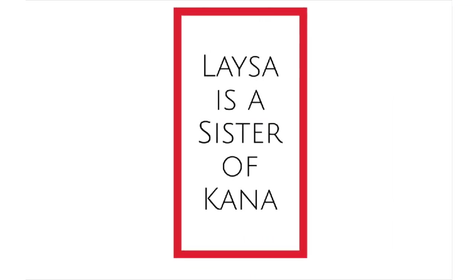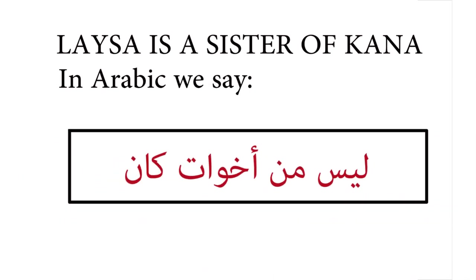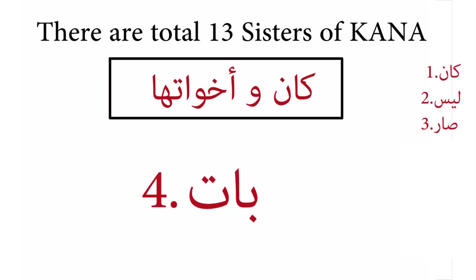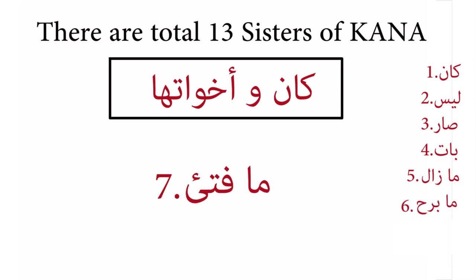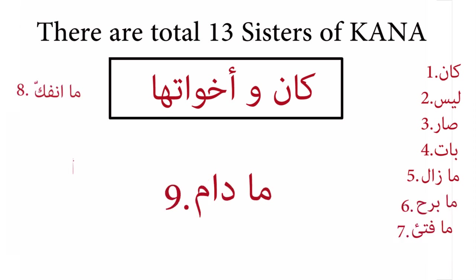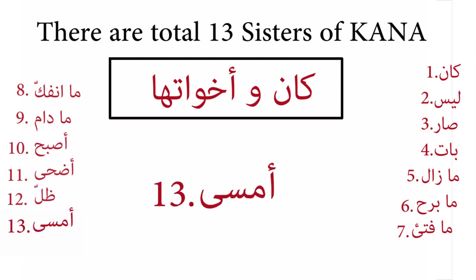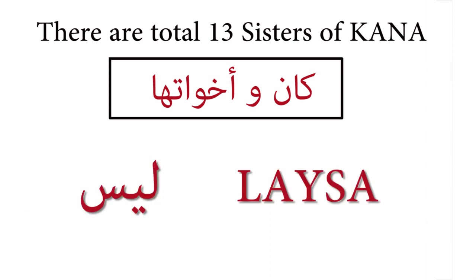Leysa is a sister of kana. In Arabic, we say leysa min achawat kana. There are a total of thirteen sisters of kana, including kana, leysa, saara, bata, mazala, mabariha, mafatea, ma'infak, madama, aspaha, adhaa, dhala, and amsa. In this lesson, we'll only be looking at leysa and how it's affected by its relationship to kana wa'ahawatiha. The other sisters of kana will be addressed at a different time.